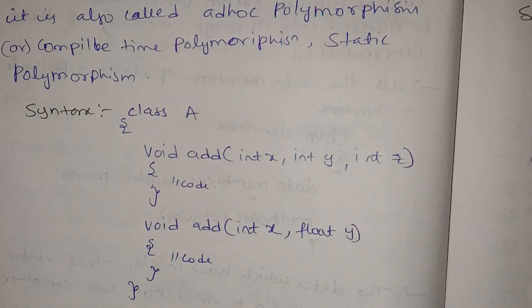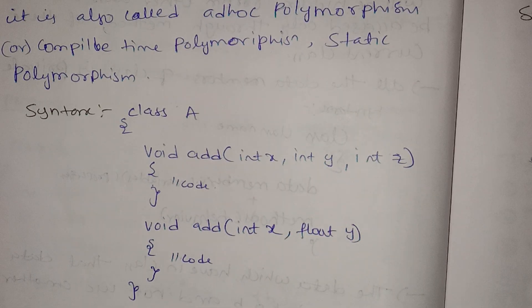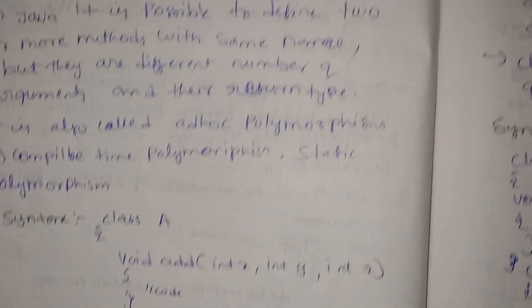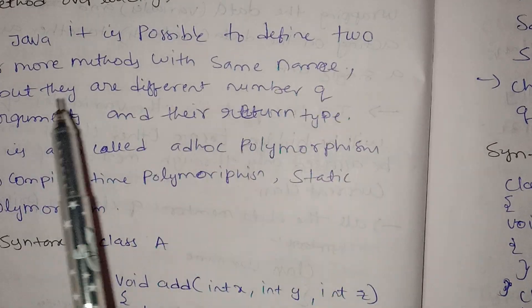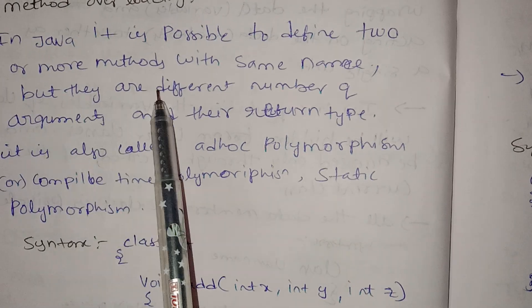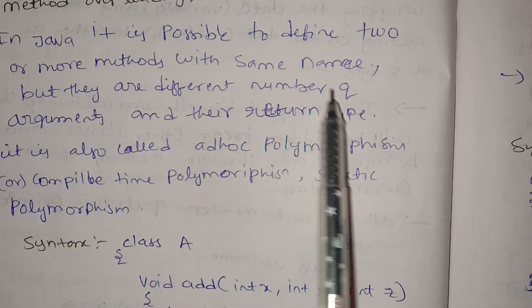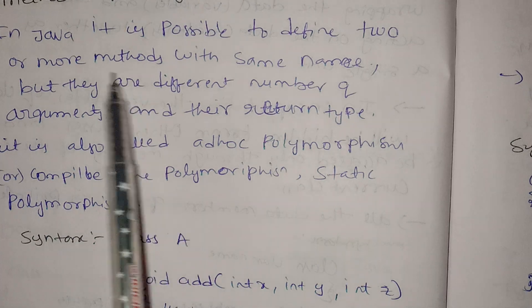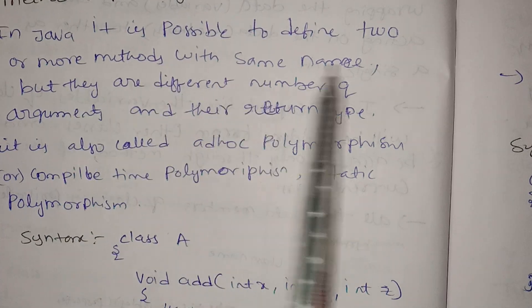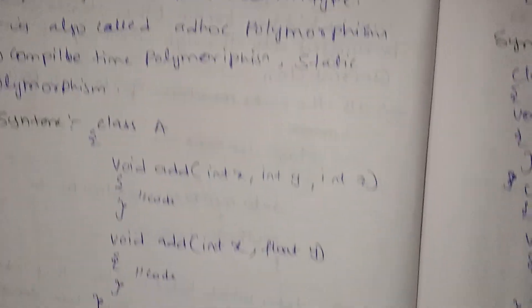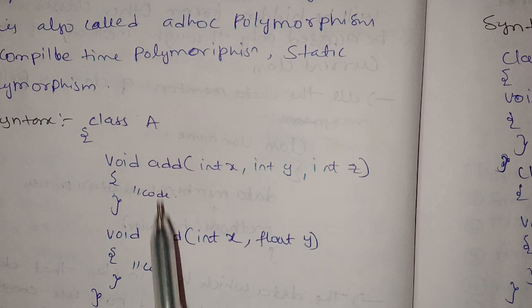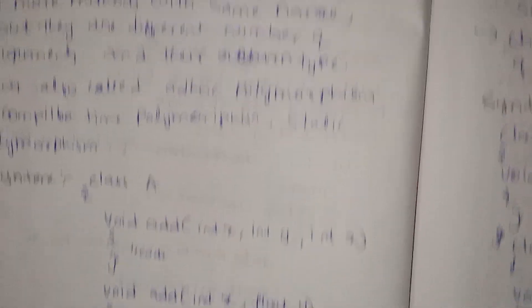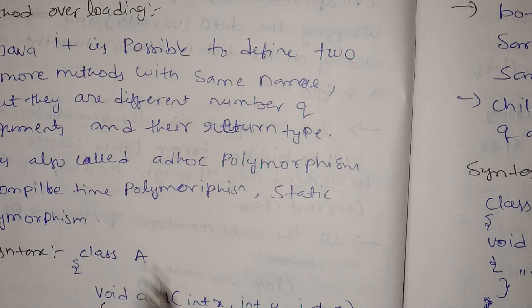For example, methods with the same name — like add — can have different arguments, which is method overloading.